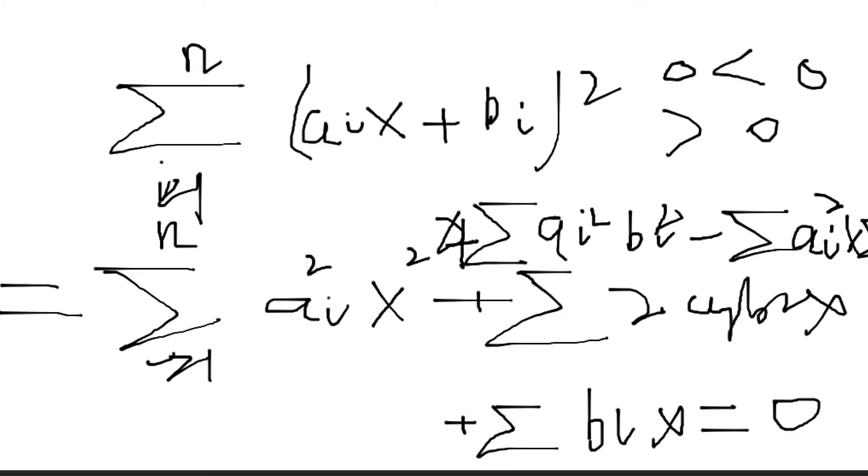So we can just simply move this to the right hand of this inequality. And then we can cancel this 4 out. We can just simply write a_i squared b_i squared.